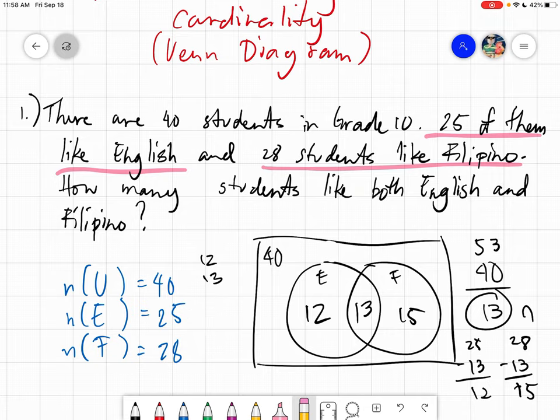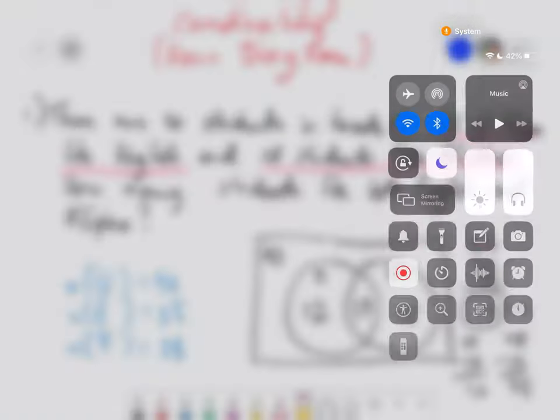So I hope you followed on that, the steps and tips to actually get the cardinality of each part of our Venn diagram. We will have another example on the next video. You can go back on this one if you would want to, and we will provide more examples. Thank you for listening everyone, and assalamualaikum warahmatullahi wabarakatuh.